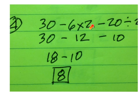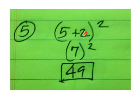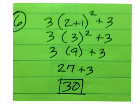On the fourth one, you must do 6 times 2, and 20 divided by 2 first to get 12 and 10. Then go left to right. Don't do 12 minus 10 — you have to do 30 minus 12 to get 18, then subtract 10 to get 8. For number 5, 5 plus 2 is 7. Square that to get 49. On number 6, go to the parentheses to get a 3. Square that to get a 9. Times 3 is 27. Plus 3 is 30.